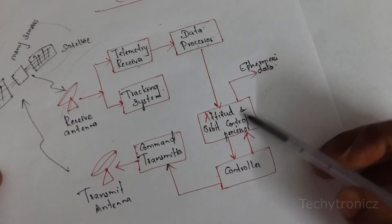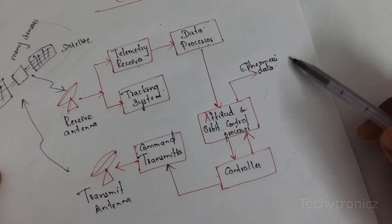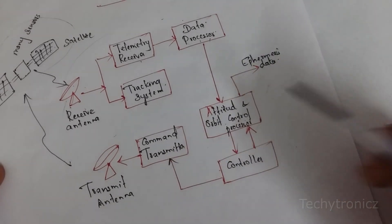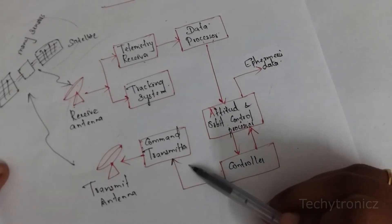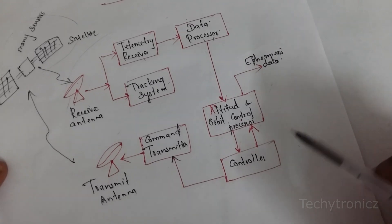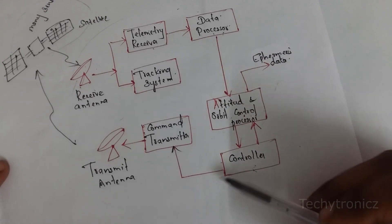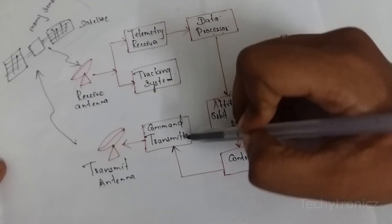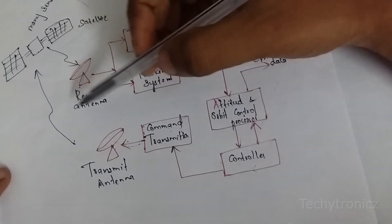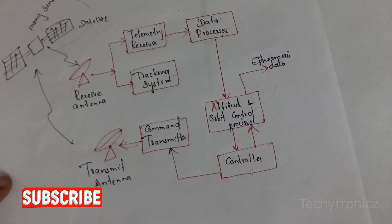From the telemetry receiver, it sends the information to the data processor. The data processor does all the processing of the information and then gives it to the attitude and orbit control processor. This attitude and orbit control processor collects all the information, that is ephemeris data. If the earth station wants to send any command to the satellite, this processor sends the data to the controller, which transmits the data to the command transmitter, and then the command transmitter gives the information to the transmit antenna, which sends the information to the satellite through the wireless channel.